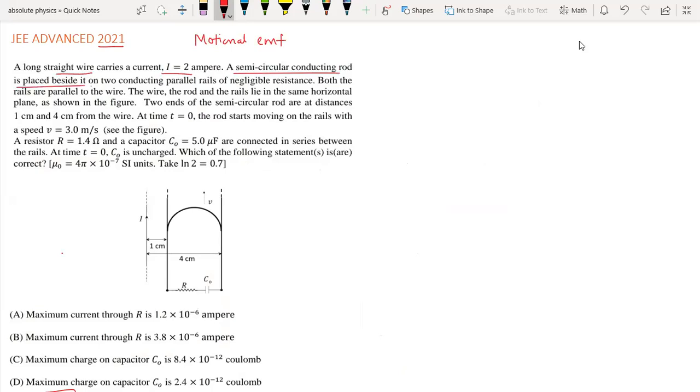placed beside it on two conducting parallel rails of negligible resistance. The two ends of the semicircular rod are at 1 cm and 4 cm.